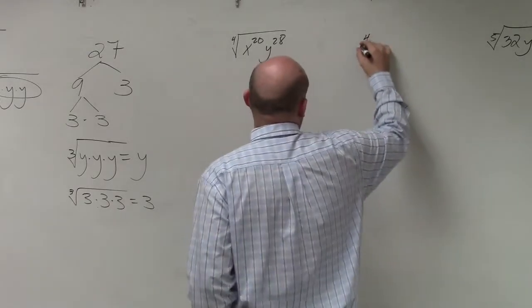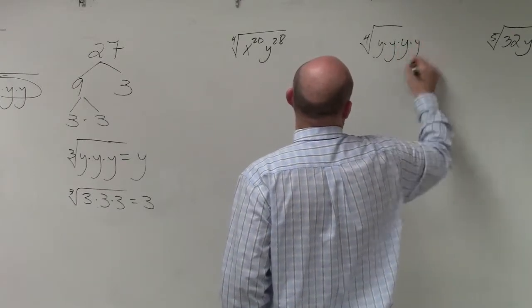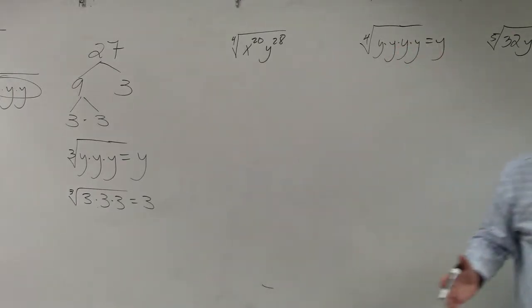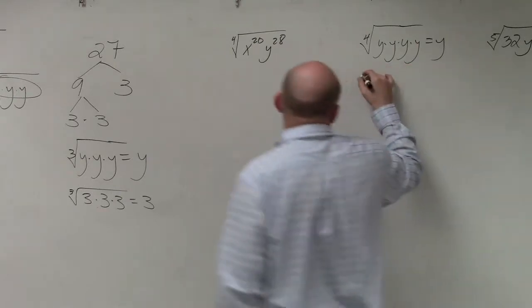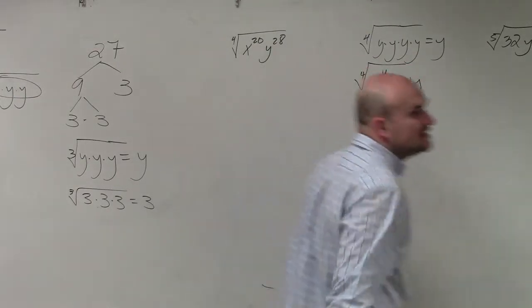We know that the fourth root of y times y is equal to y. Does everybody agree with me on that? And in the same respect, the fourth root of y to the fourth power is just equal to y.